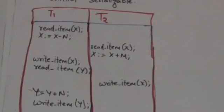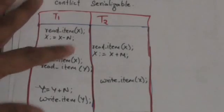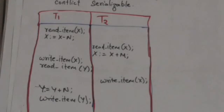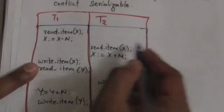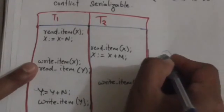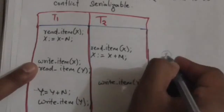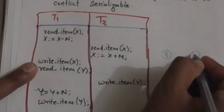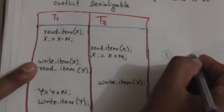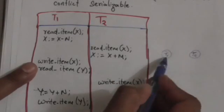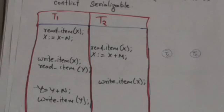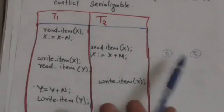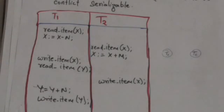Now consider this schedule. In this schedule, two transactions are participating: T1 and T2. So here we have drawn two nodes labeled T1 and T2, one for each transaction.